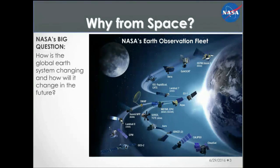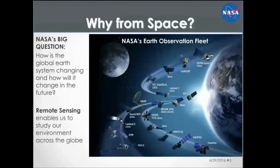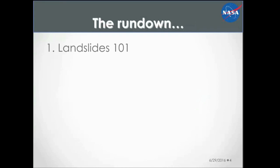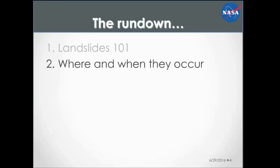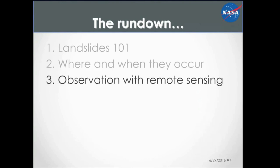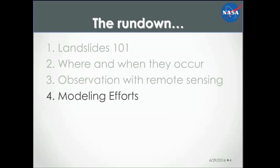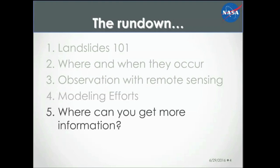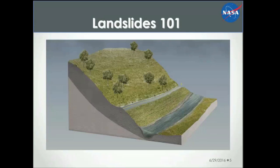Why from space? NASA has a fleet of Earth science satellites designed to look at all different elements of our Earth system. The goal for NASA Earth science is understanding how the global Earth system is changing and how it will change in the future. Remote sensing gives us a vantage point from space to look at our environment differently. Today I'll give an overview of landslide processes, where and when they occur, how remote sensing estimates potential activity, current modeling efforts, and where to get more information.